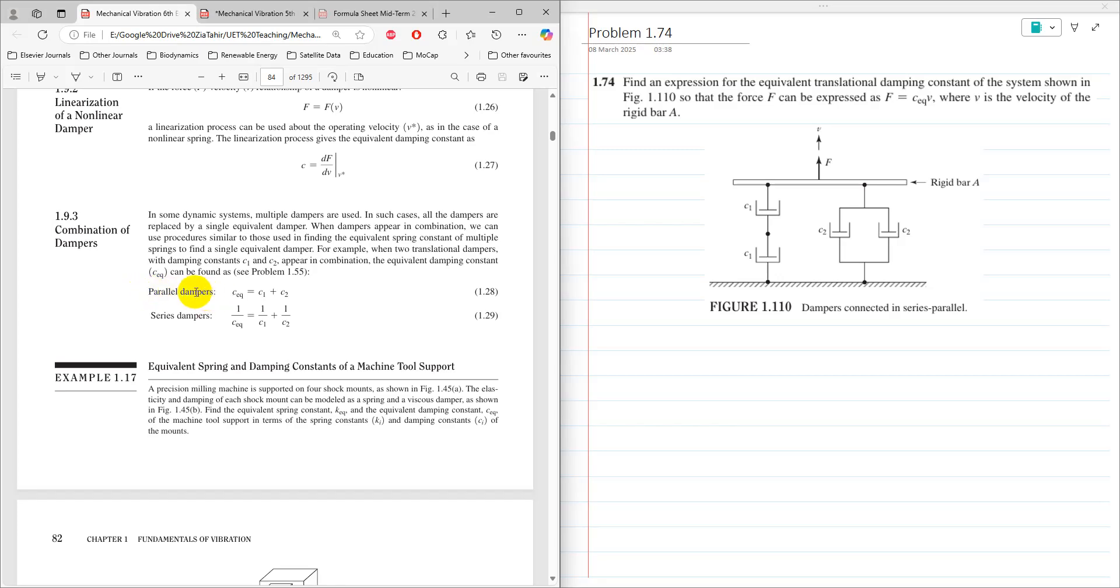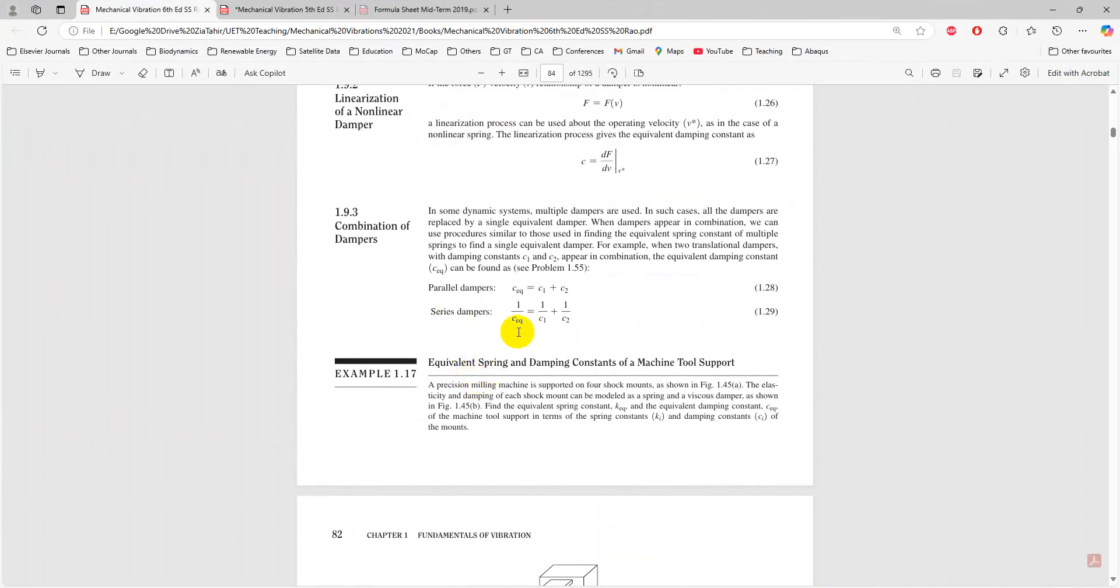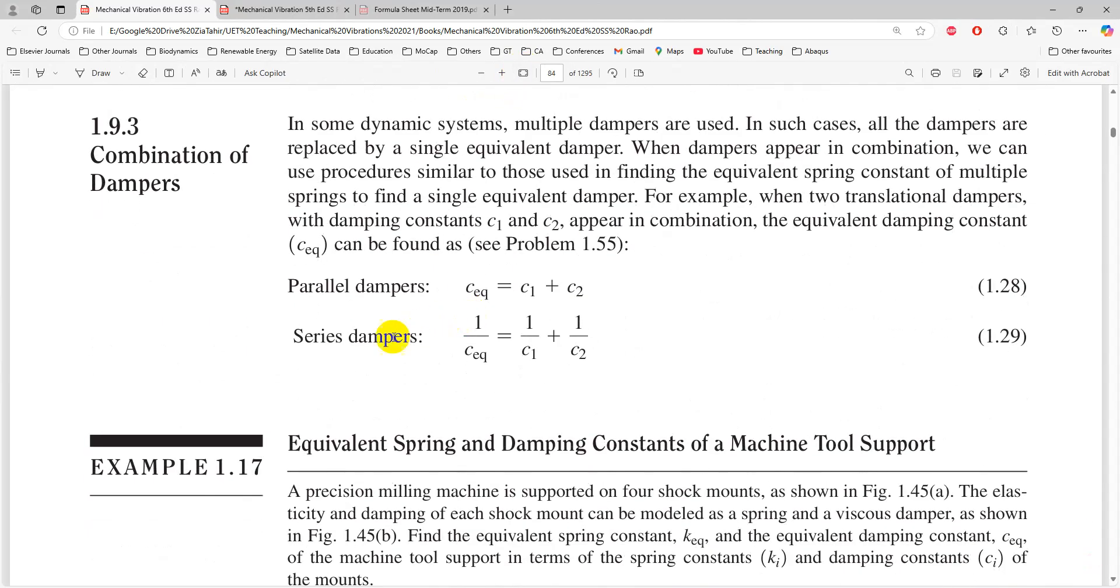For series dampers, the equivalent damping constant is given by 1 over c_equivalent equals 1 over c1 plus 1 over c2. This information is required to solve this problem.